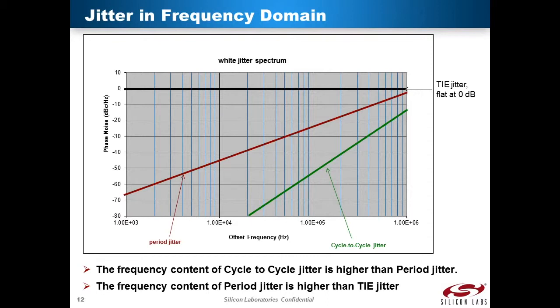TIE, or accumulated jitter, frequency content profile is uniform for all frequencies. This is a property of white noise.